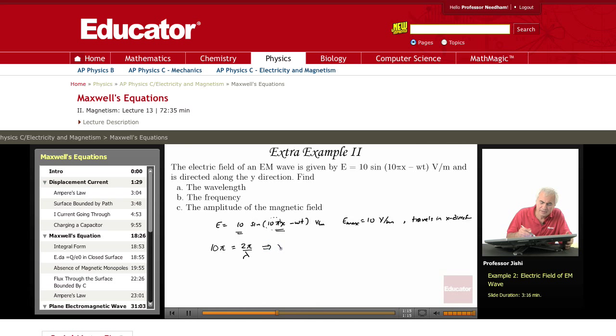So that lambda is 2 pi over 10 pi, which is 0.2 meters.